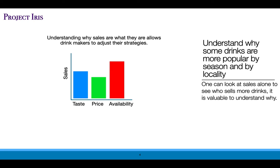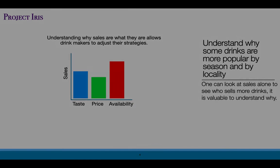There could be a question of why go to all this trouble when you could just look at sales data and determine how much product is being sold in every geography, but understanding how much is sold doesn't give you insight into why it is sold. So by looking at factors like taste, price, or availability, a drink marketing team can change their strategies to increase their sales, price, or customer satisfaction.